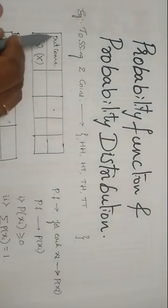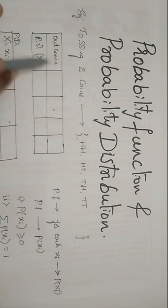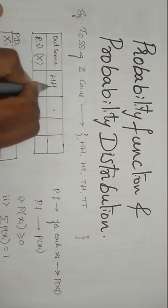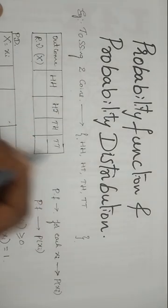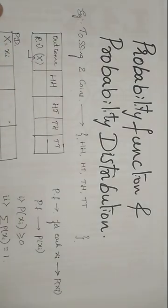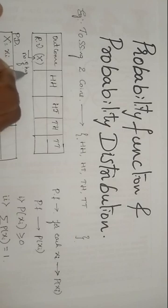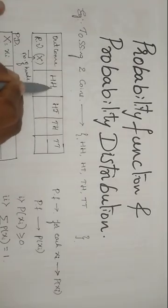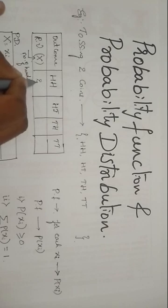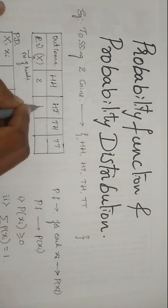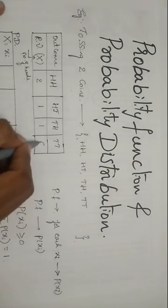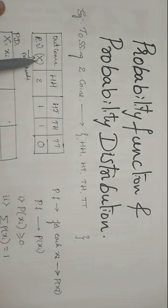Now let us fill this box with the outcome and the random variable X. The outcomes are HH, HT, TH, and TT. Let us consider the random variable X as the number of heads. In HH, how many heads are there? It is 2. In HT, the number of heads is 1. In TH, it is also 1. In TT, it is 0. This is the random variable X.